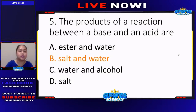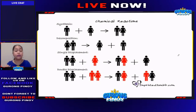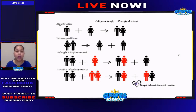Now let me discuss why the answer is letter B. We have different types of chemical reactions. In our previous live stream, I have discussed the different types of reactions that we have in chemistry. We have physical reaction, we have chemical reaction, and we have nuclear reaction.